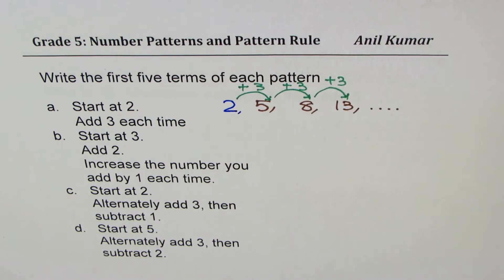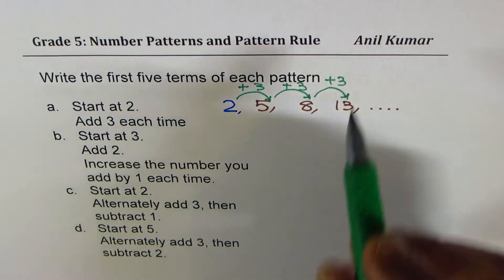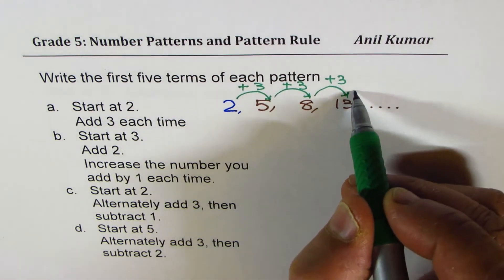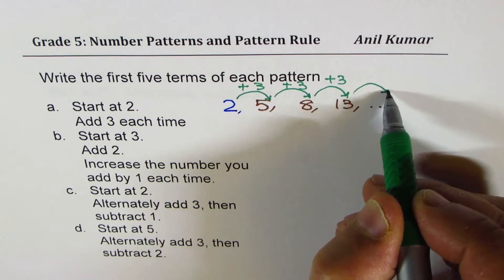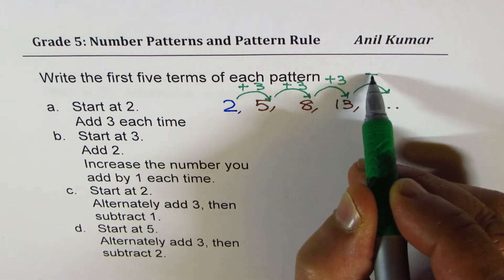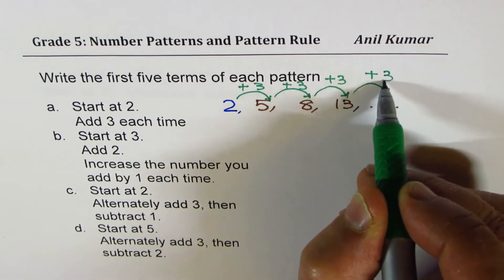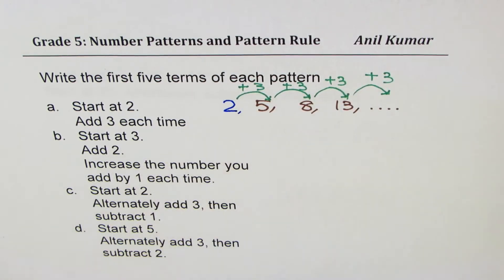We have to get the first five terms. I'm leaving the next term for you — you just have to add three to get that term.